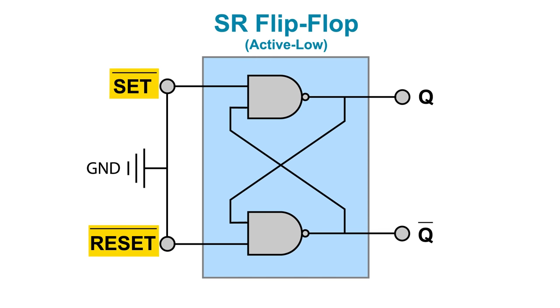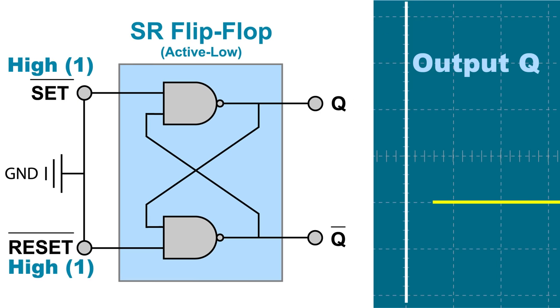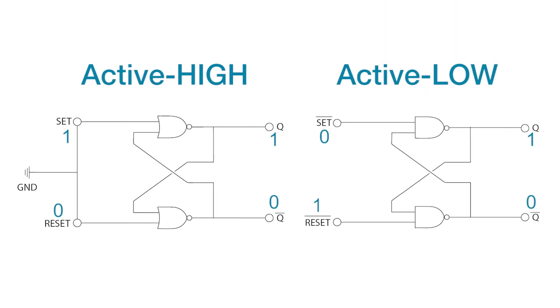Notice the inputs on this flip-flop are set bar and reset bar. This tells us they are active low, meaning the inputs are normally high. With this flip-flop, output Q is latched high when the set input is active, going low. Again, output Q remains latched high when set returns to its normal high. When the reset input is active, going low, output Q is reset back to low. So whenever set goes low, output Q goes high and latches there, until reset goes low, resetting the flip-flop. With both types of latches, the set input being active triggers the Q output to go high, no matter if the input is active low or active high. And the reset input being active resets output Q back to low.